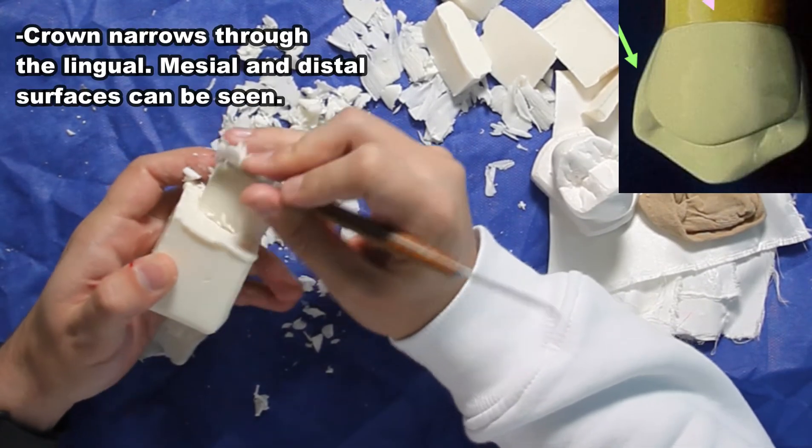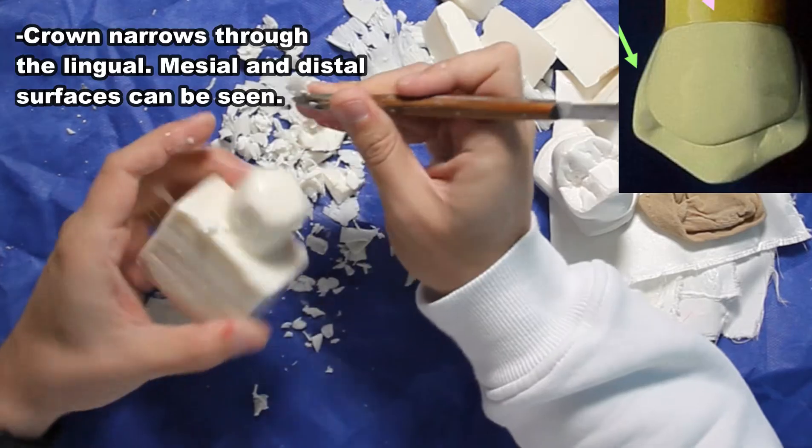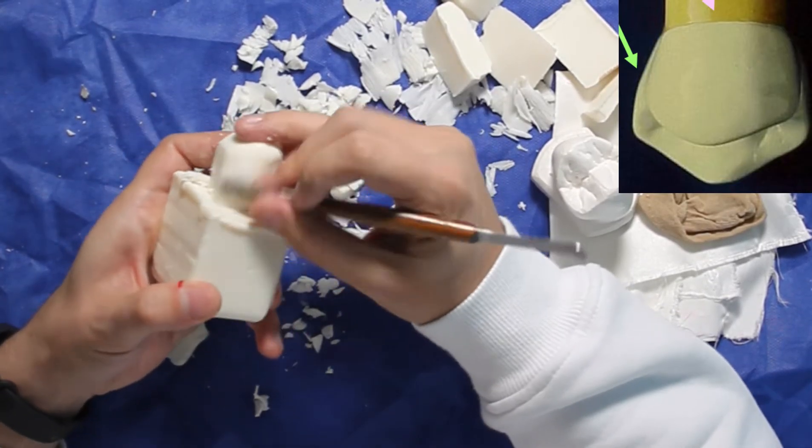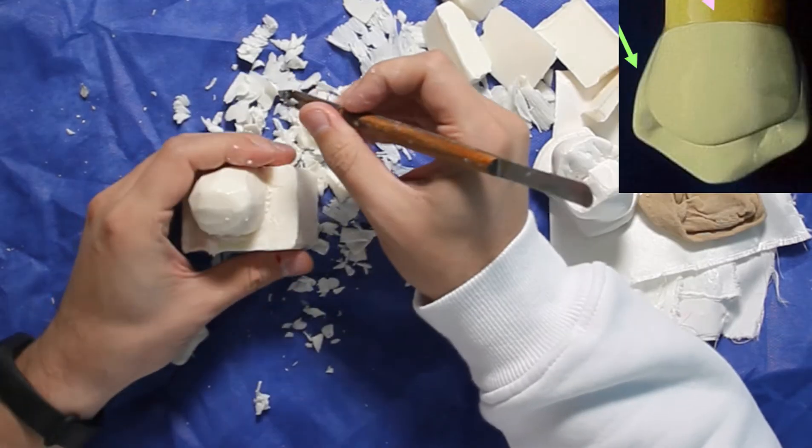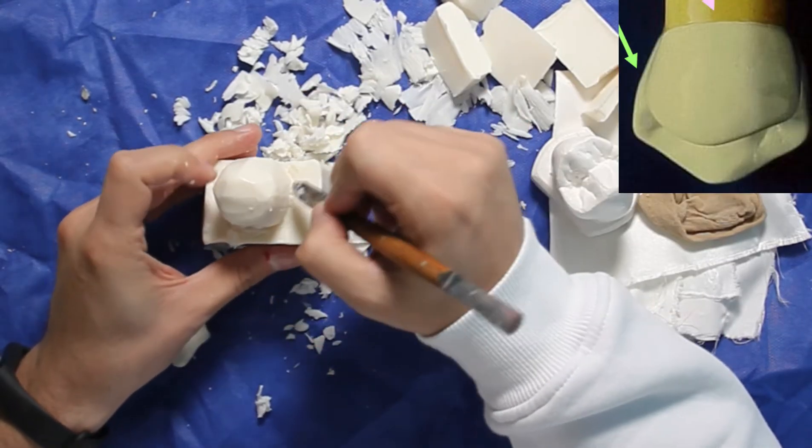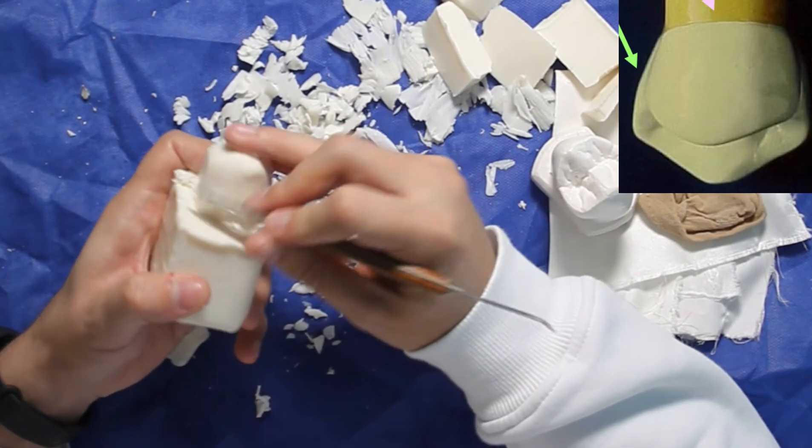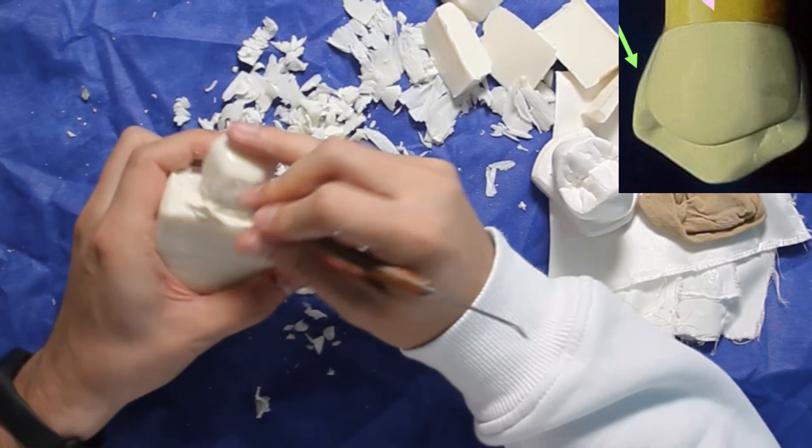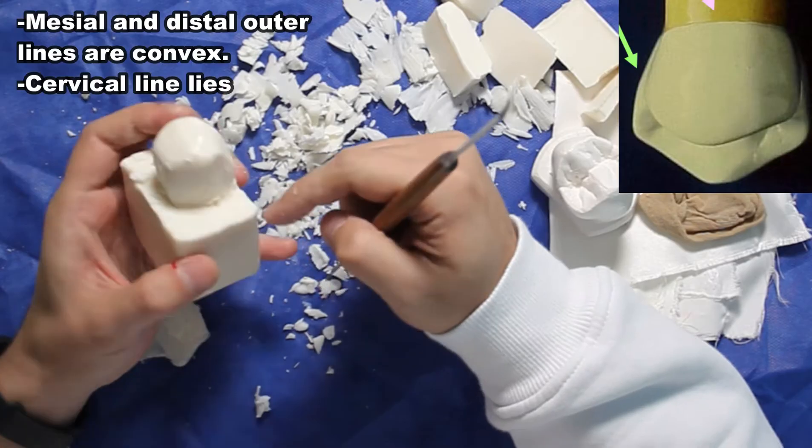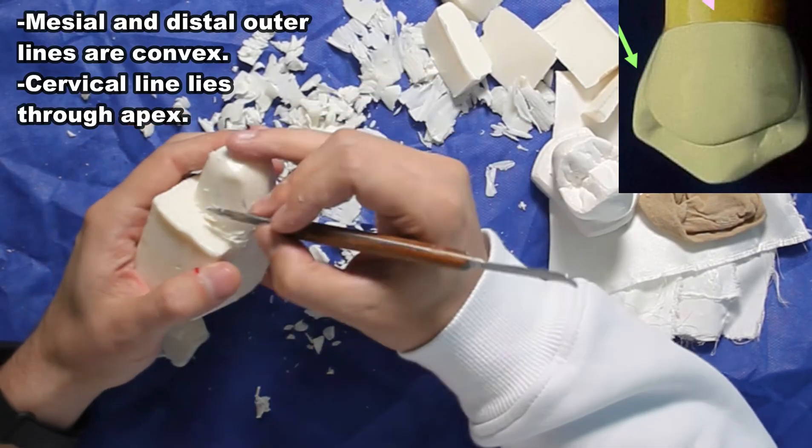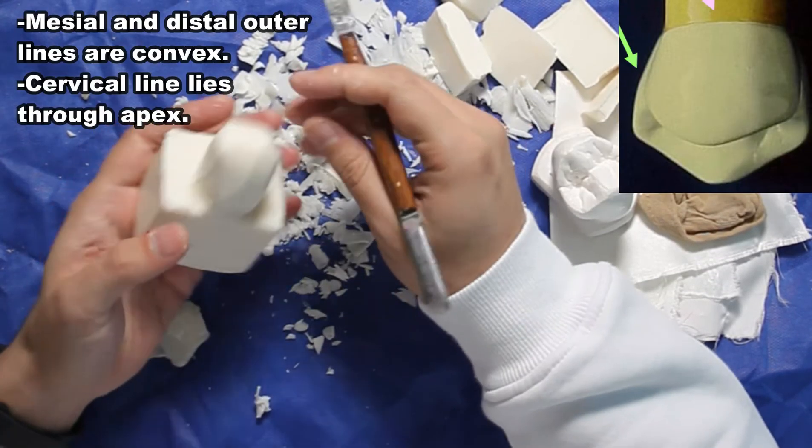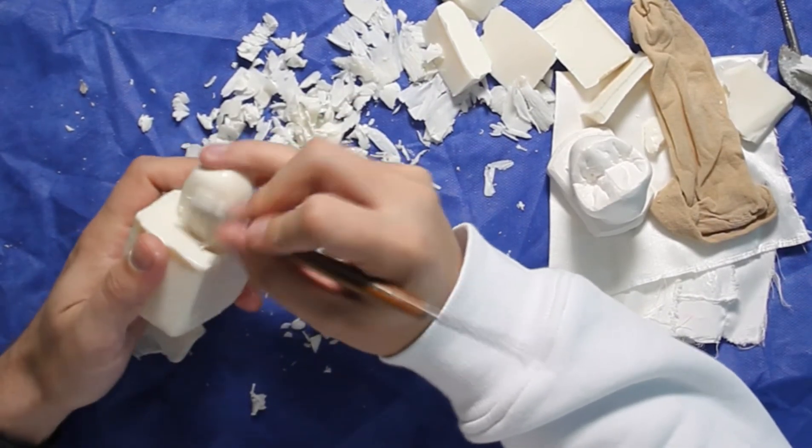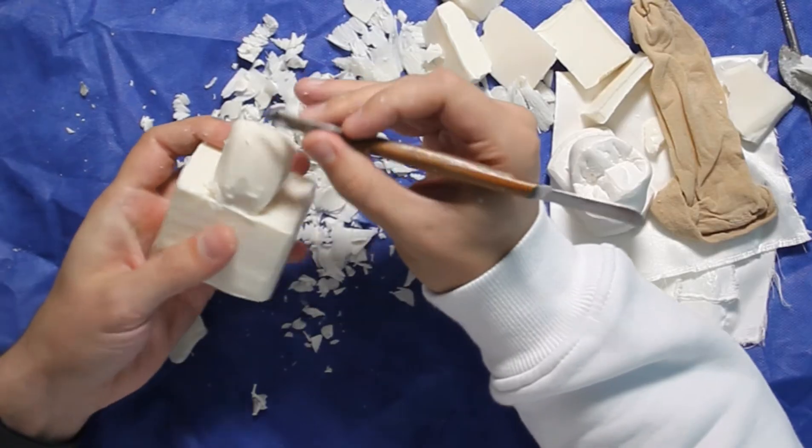From buccal to the lingual, mesial and distal surfaces can be seen from the lingual face. As you see in the picture, mesial and distal part. Mesial and distal outer lines are convex. Cervical line lies through apex. As always, we are rounding our corners and getting the final shape.